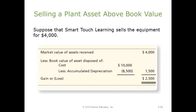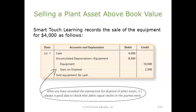Now suppose we sell the equipment for $4,000. The cash received is $4,000 and the book value of the asset is $1,500. Since cash is higher than book value, we're going to have a gain on this transaction. The entry is: debit cash $4,000, debit accumulated depreciation on equipment $8,500, credit equipment $10,000, and credit gain on disposal for the difference.